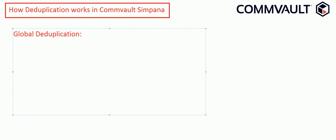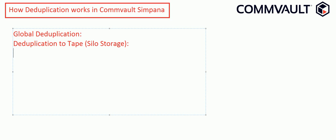There is another concept called deduplication to tape — also known as silo storage. Deduplication to tape can copy data in a deduplicated format. It extends to primary disk storage space and moves deduplicated data to secondary disk storage or tape. It responds automatically to restore requests by copying only the necessary data blocks from the disk library and then restoring the data.